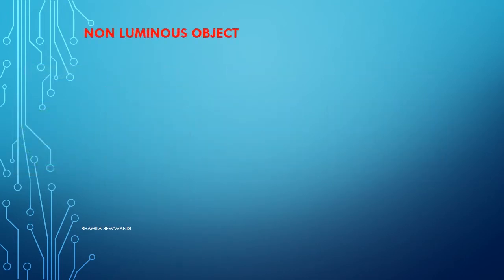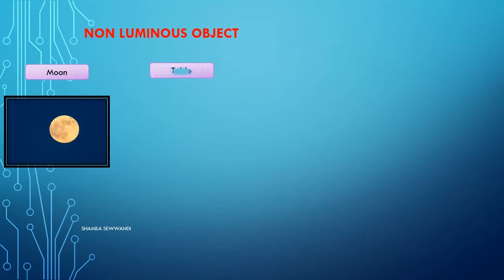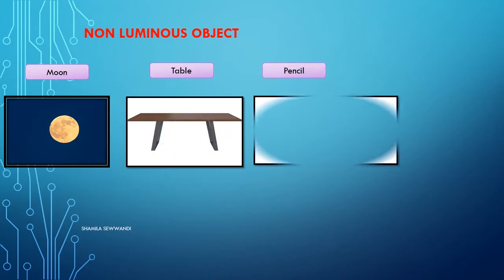What are the examples for non-luminous objects? Moon, table, pencil are examples of non-luminous objects.